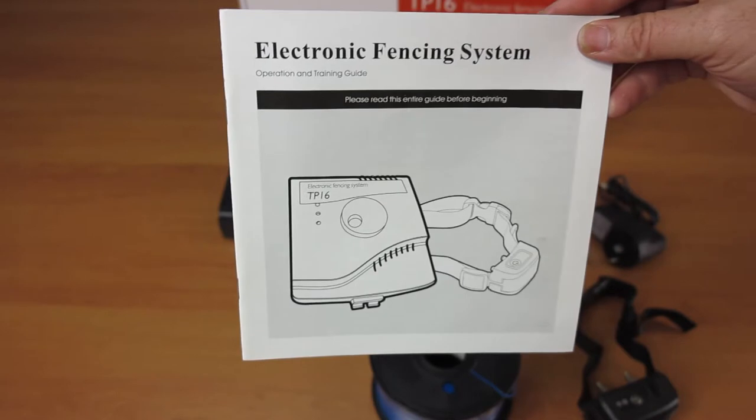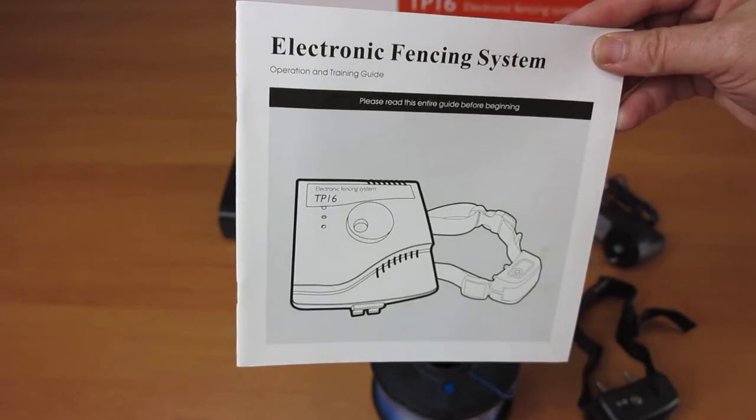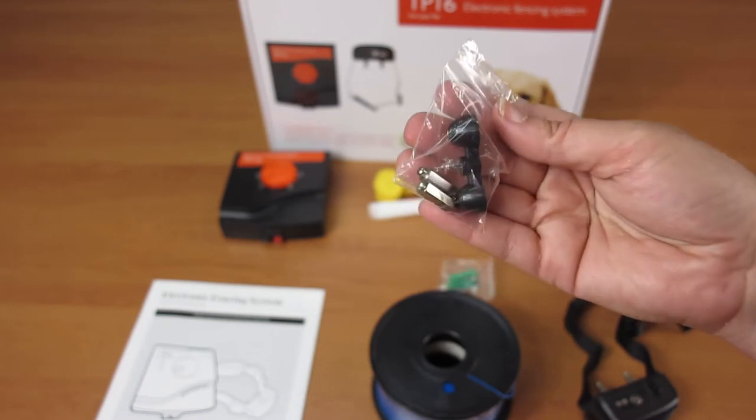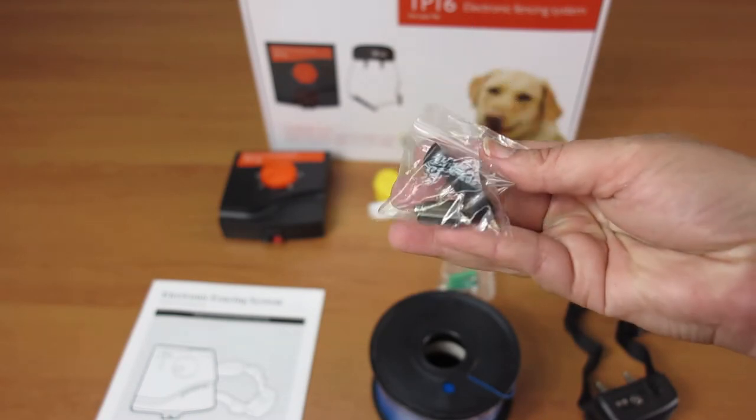A warning time will be issued first so they learn to adjust to the sound instead of a stimulation. After four to ten seconds, and if your dog continues to move closer to the boundary, the stimulus will be progressive.